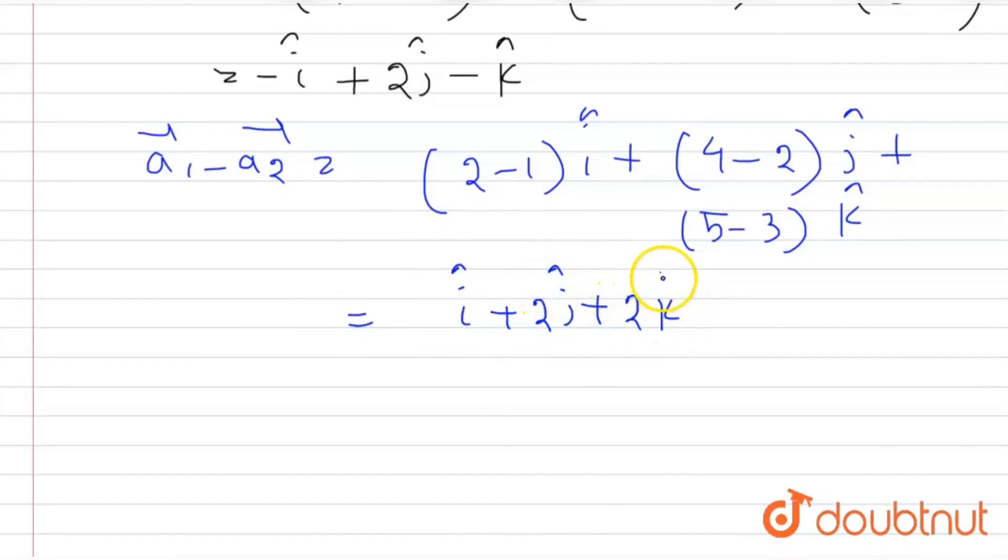Now therefore, if we put these values in the formula, we will get i cap plus 2j cap plus 2k cap dot minus i cap plus 2j cap minus k cap by mod n1 cross n2, which equals to root over minus 1 square plus 2 square plus minus 1 square.